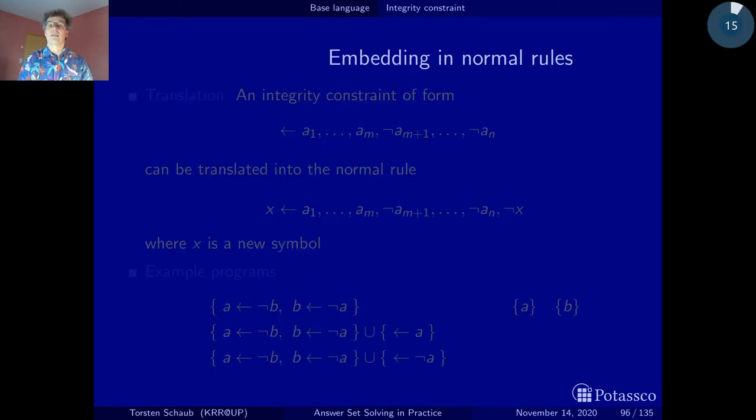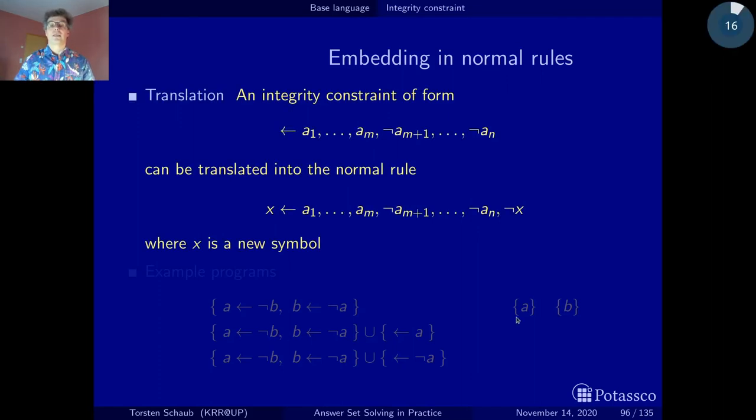Here's the idea. We can embed integrity constraints in normal rules by taking each integrity constraint like this and by adding a new auxiliary atom in the head, and also adding the same atom in the body but in a negative way.